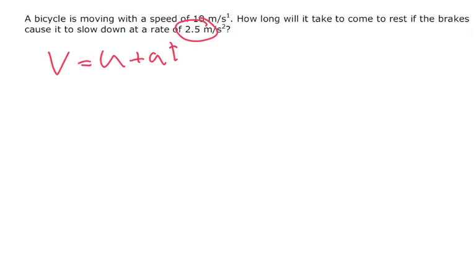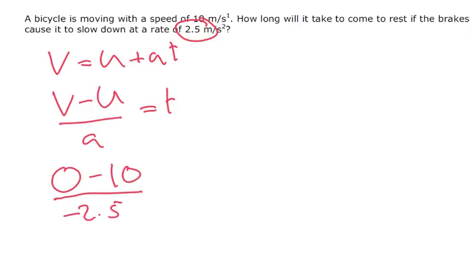We've got to know time is what we're after. So V minus U divided by A equals T. Well, V is going to be 0, minus 10, divided by minus 2.5. So we've got minus 10, divided by minus 2.5, which is going to give us an answer of 4 seconds. That's our final answer.